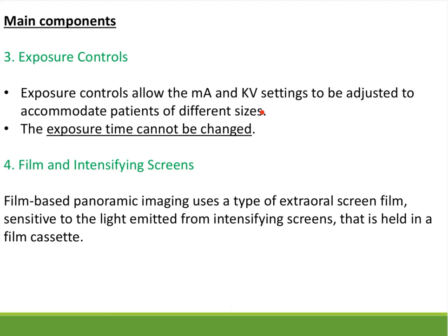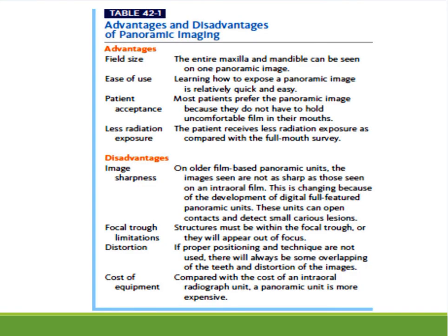Film-based panoramic imaging uses extra-oral screen film sensitive to the light emitted from the intensifying screen. If the intensifying screen emits green light, the film must have a dye sensitive to green. Other options include blue light and ultraviolet radiation. This is called a screen-to-film combination. The color of light emitted by the intensifying screen must match the sensitivity of the film — if the screen emits green light but the film is sensitive to blue light, it will not produce a good image and will result in radiographic noise, fogging, or lack of clarity.